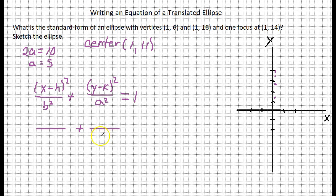Now, we know that a is 5, so a squared is 25. Now your center is always at (h,k). So h is the 1, k is the 11.